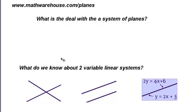Now, we want to try to understand what is the deal with a system of planes. Or what is the deal with a system of three-variable linear equations? Remember, a plane is a three-variable linear equation. And it can be pictured as that blue thing we looked at earlier. Now, before we try to understand that, let's think back about what we knew about two-variable linear systems.